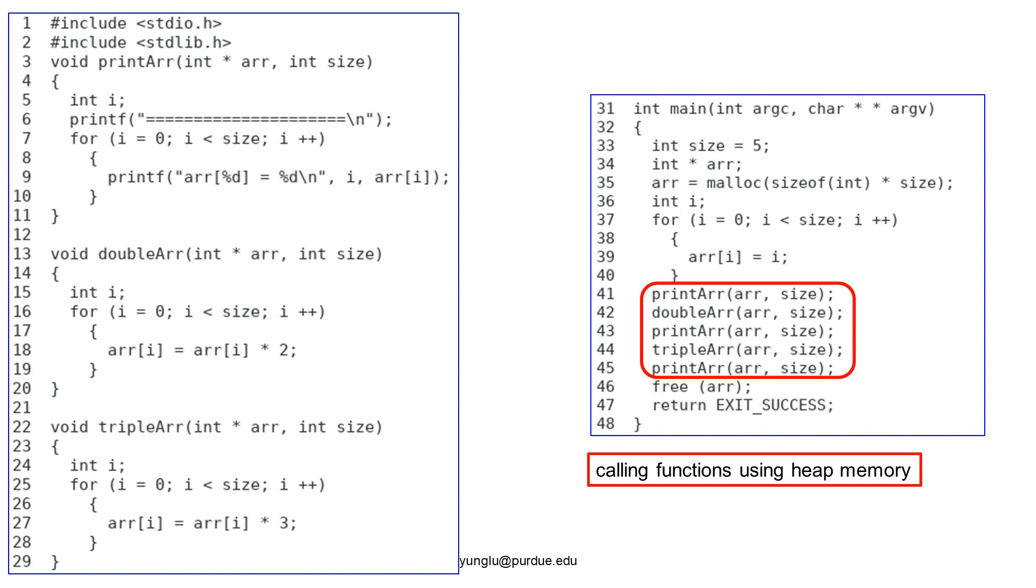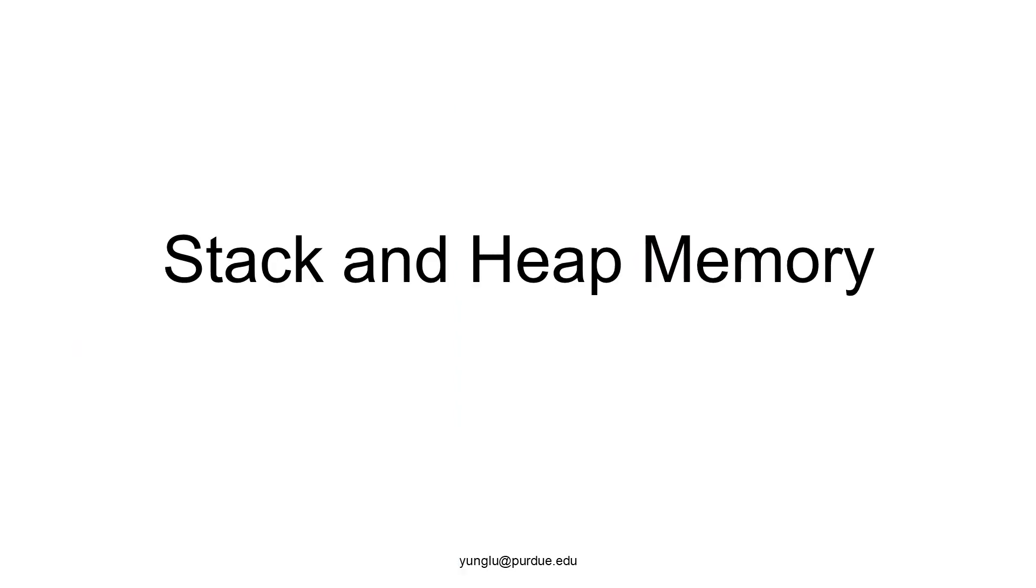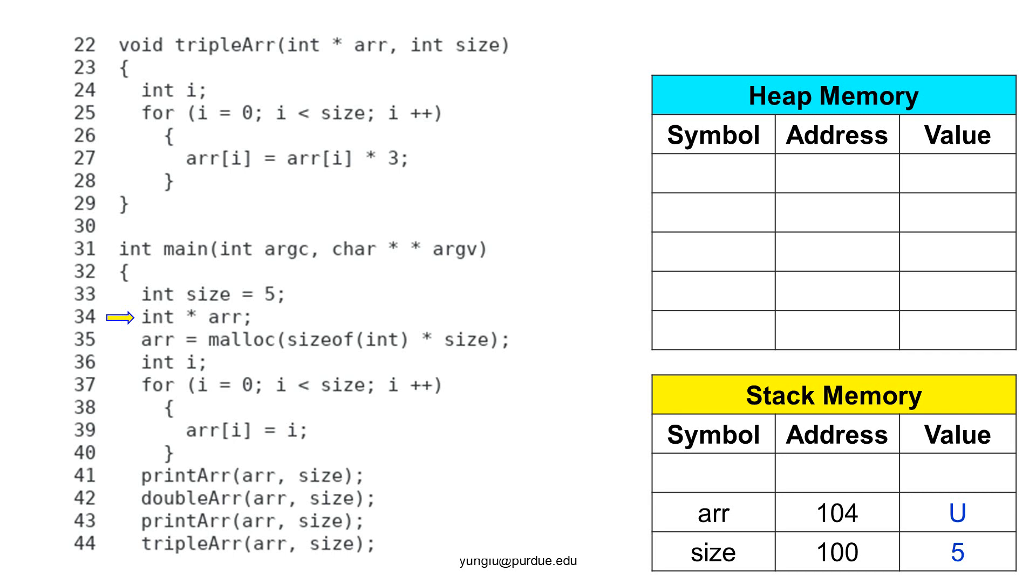Let's take a closer look at how the array is used inside the functions. As you can see, the array is used in the same way. To really understand what is happening, we have to study the stack and heap memory. This slide shows the status of the stack and the heap memory when the program reaches line 34. At this moment, the integer size has been assigned the value of 5. The pointer arr has not been initialized. Thus, its value is marked u as unknown. Please remember, if a pointer is not initialized, its value is unknown. It is not necessarily 0. It may be 0. It may be not.